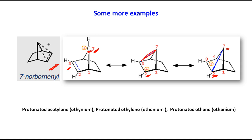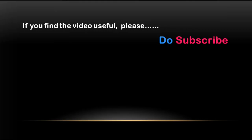Finally, some more examples of non-classical carbocations include protonated acetylene, protonated ethylene, and protonated ethylene — their corresponding names are given in brackets. You can draw the structures yourself. I hope I have been able to shed some light on non-classical carbocations. Thank you for watching.